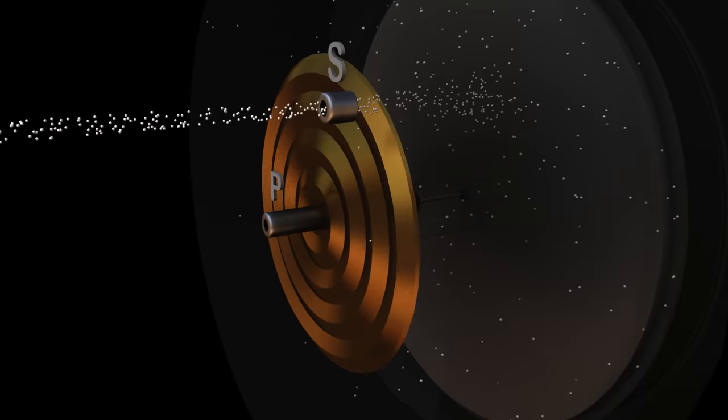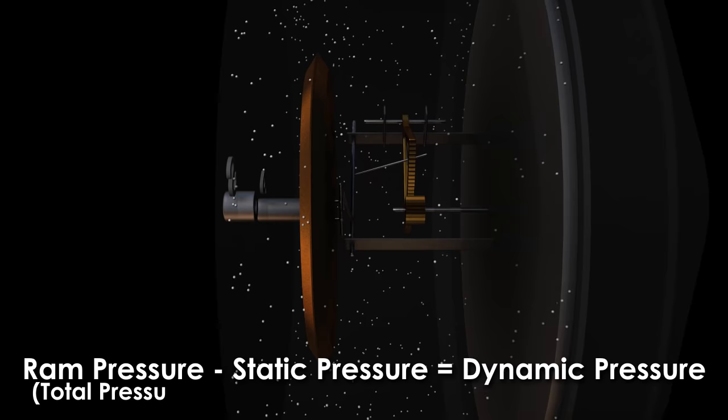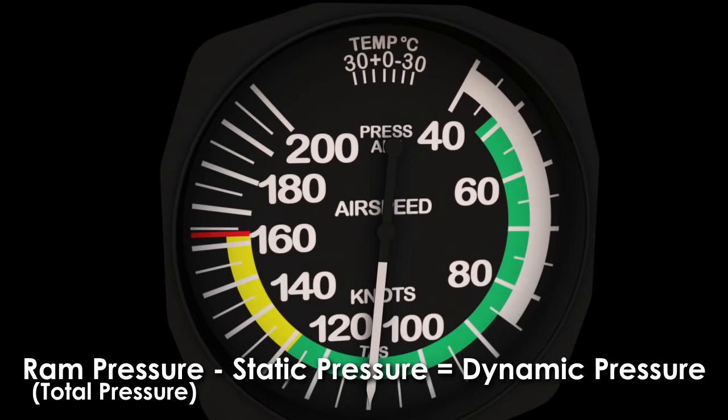This will subtract out the static air pressure that the pitot tube captured and only allow for the dynamic pressure to be read on the instrument. This keeps the airspeed indicator reading the correct values, no matter what the altitude of the airplane is.